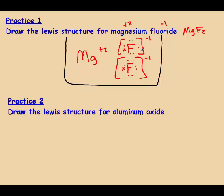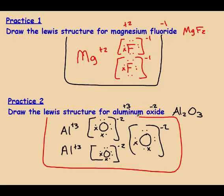Negative one and negative one is negative two, which cancels out with the positive two. Pause the video and do aluminum oxide on your own — restart when you have an answer. The final answer for aluminum oxide: the formula is Al₂O₃, so we need two aluminums with a plus three charge and three oxygens each with negative two charges, each oxygen having six valence electrons plus two X's showing they gained two electrons each.